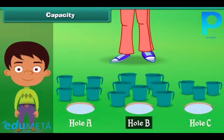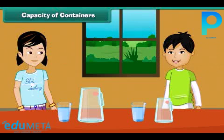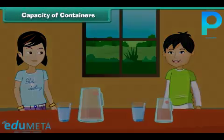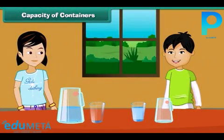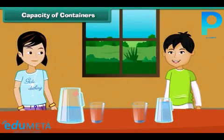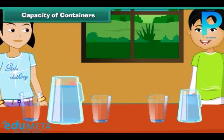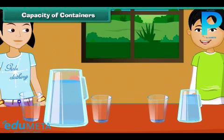Capacity of containers: Maria pours one glass of water in her jug. When John pours one glass of water in his jug, it looks different. Maria thinks she will have to pour around two glasses of water to fill her jug, while John thinks he will have to pour one glass to fill his. Whose jug holds more water? Yes, Maria's jug holds more water.